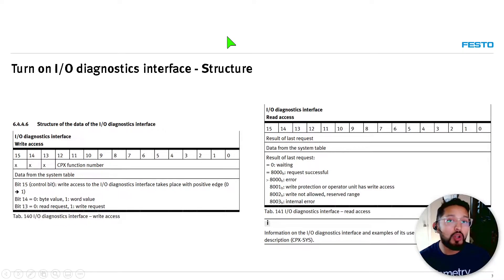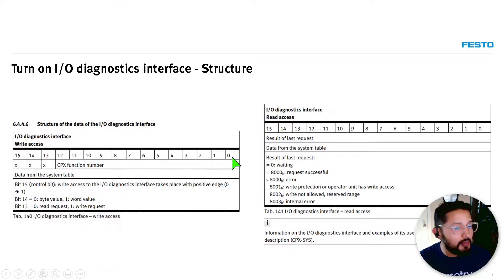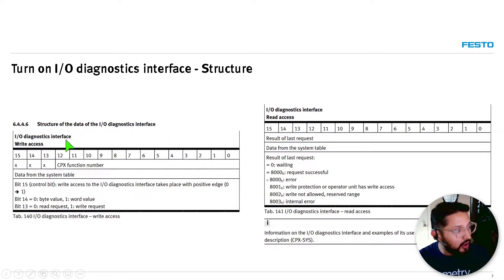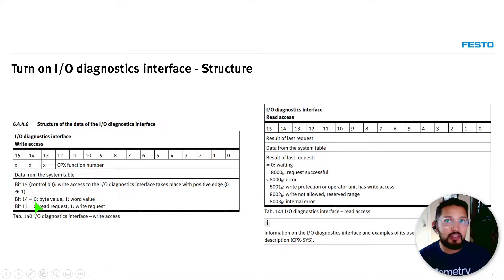Once you enable the IO diagnostics interface, there is a specific structure. You get two bytes — 16 bits — for reading and writing. On the write axis: bits 0 to 12 are the CPX function number, bit 13 specifies if it's a read or write request, and bit 14 specifies the data type — we'll set bit 14 to 1 for a word value.